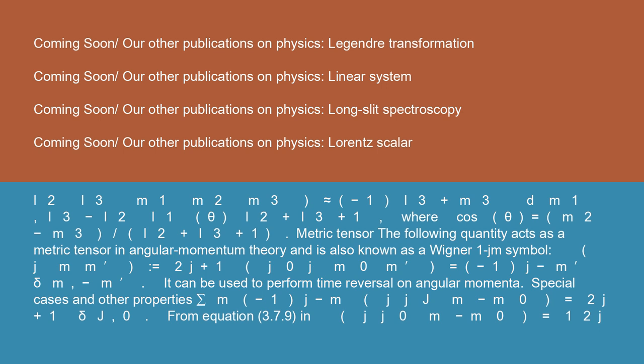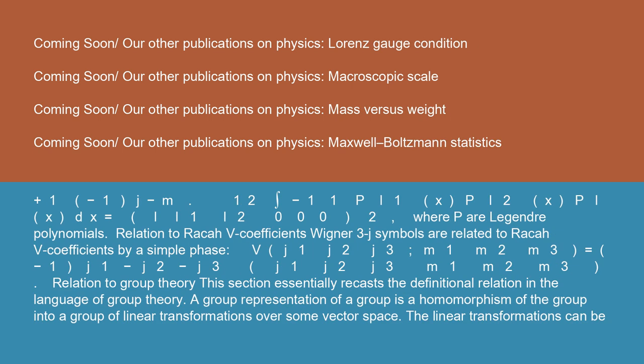Metric tensor: the following quantity acts as a metric tensor in angular momentum theory and is also known as a Wigner 1JM symbol: (J M; M') = √(2J + 1) * (J 0 J; M 0 M') = (-1)^(J-M) * δ_{M,-M'}. It could be used to perform time reversal on angular momenta. Special cases and other properties: Σ_M (-1)^(J-M) * (J J J; M -M 0) = (2J + 1) δ_{J,0}. From equation 3.7.9: (J J 0; M -M 0) = (1/√(2J+1)) * (-1)^(J-M). And (1/2) ∫_{-1}^{1} P_{L1}(x) P_{L2}(x) P_L(x) dx = (L L1 L2; 0 0 0)^2, where P are Legendre polynomials.